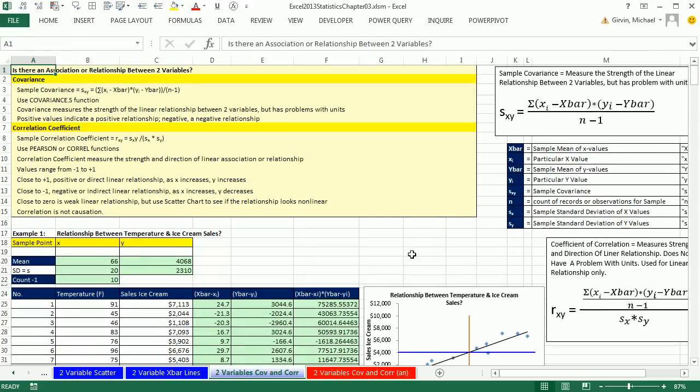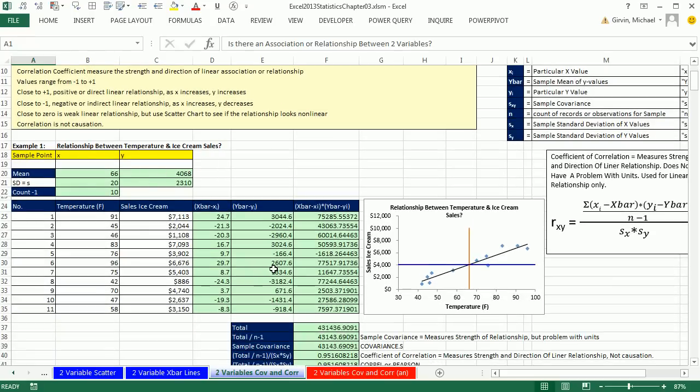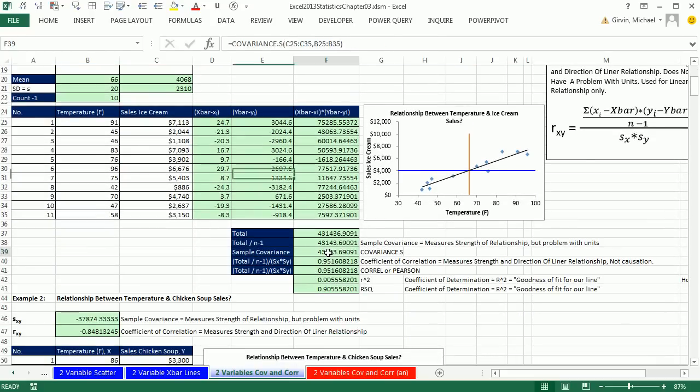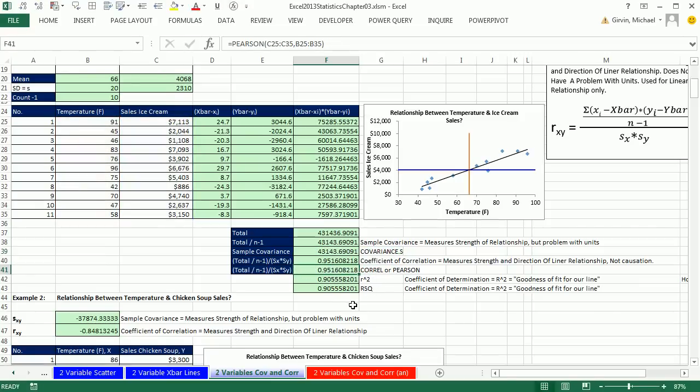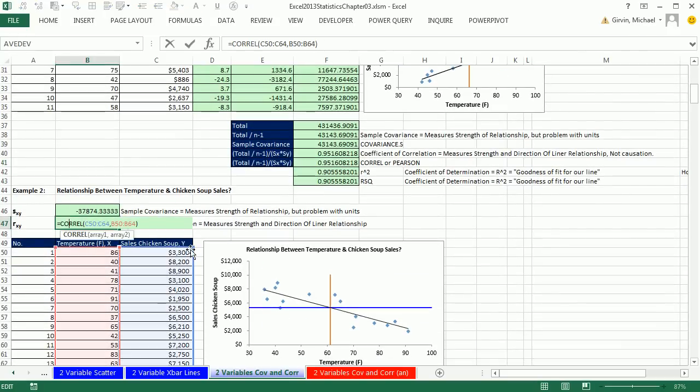Control-Home. So in this video, we talked about calculating covariance and coefficient of correlation. We did it longhand. And then we saw covariance.s for sample data. And we saw either Pearson or Correll. That's it for chapter 3. We'll see you next chapter, chapter 4, where we start our studies about probability. See you next video.